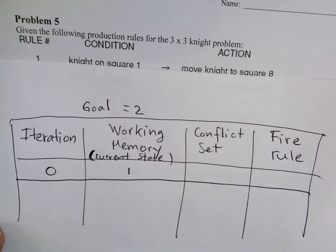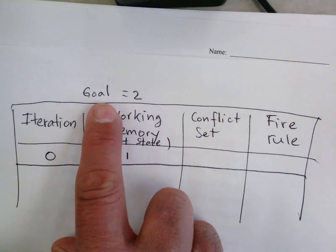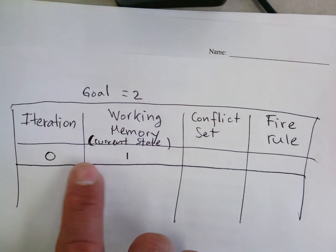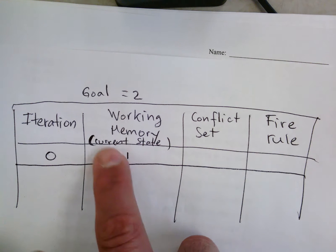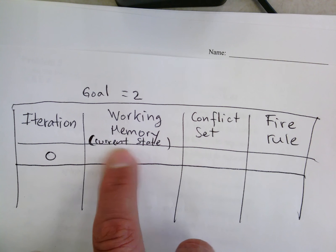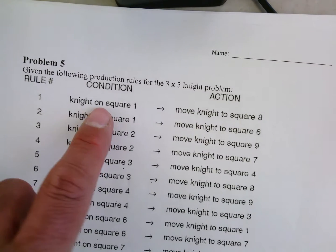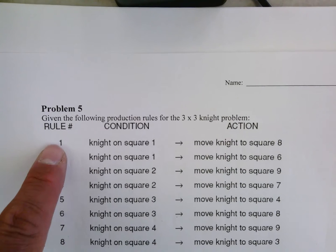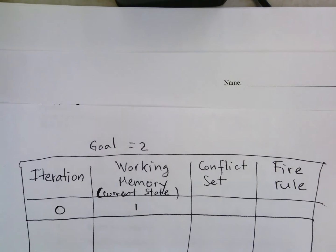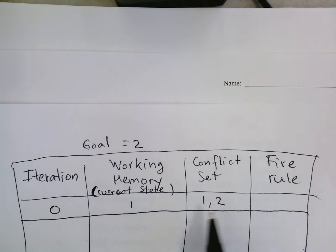We start on square one with the goal of reaching square two, and that's what we keep in working memory. Being on square one matches two rules: rule one and rule two. So the conflict set contains rule one and rule two.